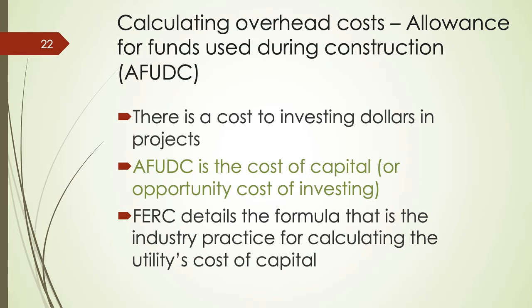The idea with AFUDC is this: there is a cost to investing dollars in projects. AFUDC represents the cost of capital, or the opportunity cost of investing. For example, you have a dollar — you can leave it in the bank, fund a project with it, use it for maintenance costs, or donate it as part of a general fund transfer to your local community. There are options, so there is an opportunity cost of investing that dollar.